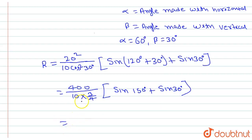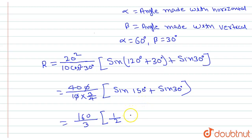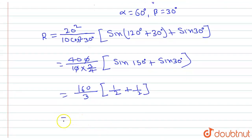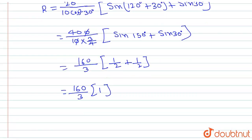From here we can see this simplifies to 160 divided by 3. The value of sin 150 degrees equals 1 over 2, because in the second quadrant sine is positive and sin 150 equals sin 30 degrees, which is 1 over 2. And sin 30 degrees is also 1 over 2, so 1/2 plus 1/2 equals 1. Therefore, the range on the inclined plane equals 160 divided by 3 meters. This is the required answer. Hope this answered your question. Thank you.